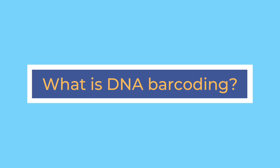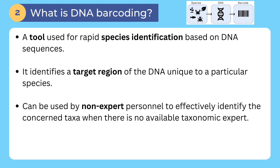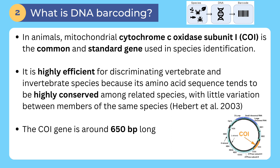What is DNA Barcoding? It is a tool used for rapid species identification based on DNA sequences. It identifies a target region of the DNA unique to a particular species. It can be used by non-experts to effectively identify the concerned taxa when there is no available taxonomic expert. In animals, the mitochondrial cytochrome C oxidase subunit 1 or CO1 is the common and standard gene used in species identification. It is highly efficient for discriminating vertebrate and invertebrate species, because its amino acid sequence tends to be highly conserved among related species, with little variation between members of the same species. The CO1 gene is around 650 BP long.